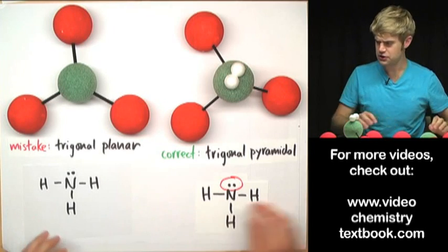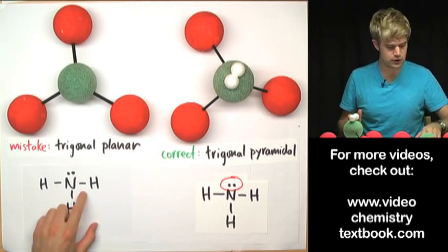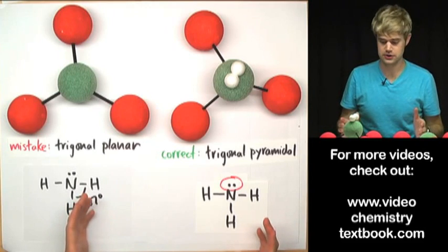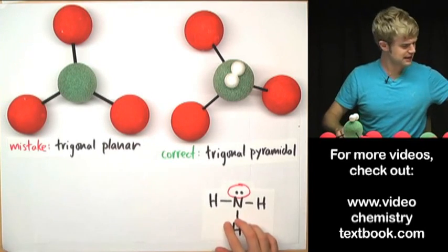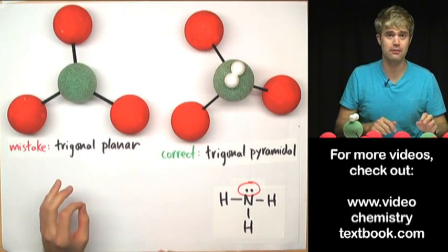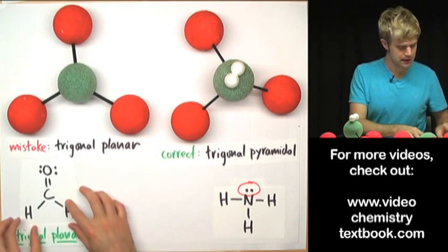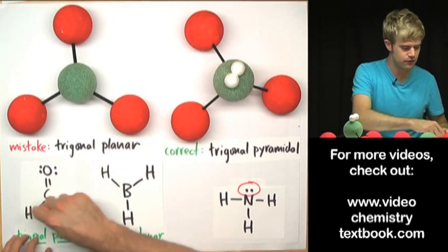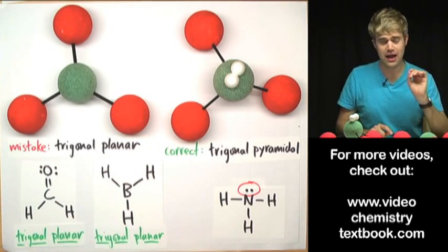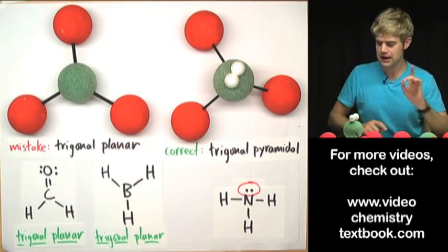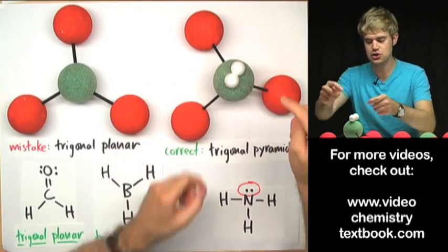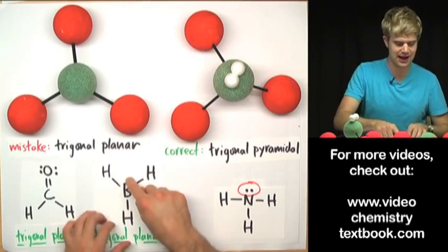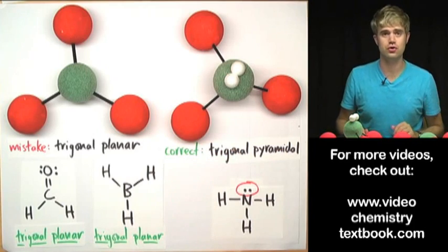You can particularly see the pyramidal shape if you hold it on its side — all the atoms are bent down, which is very different from trigonal planar where they're all flat. Sometimes you need to know the bond angles: for NH3, the angles between any of the bonds are about 107 degrees. True trigonal planar molecules have one central atom and three atoms around the outside with no unshared electron pairs. It's the unshared electron pair on nitrogen that makes NH3 trigonal pyramidal instead of trigonal planar.